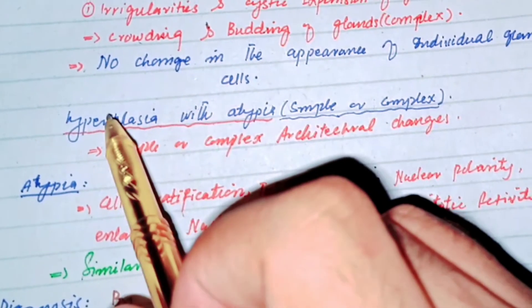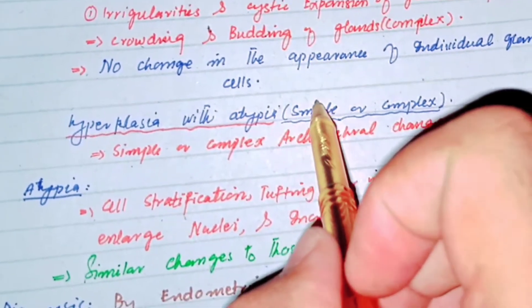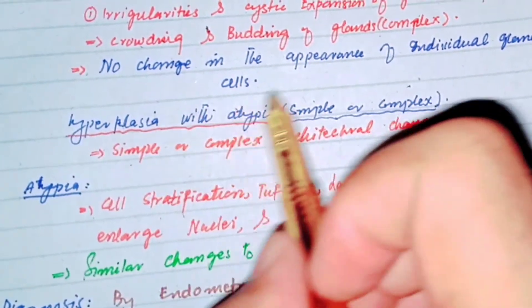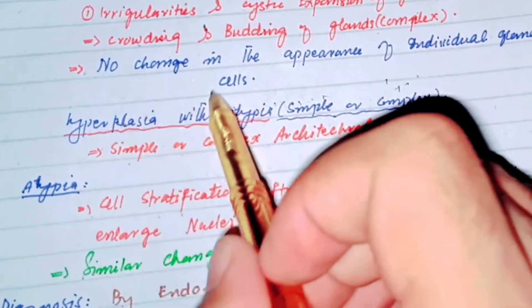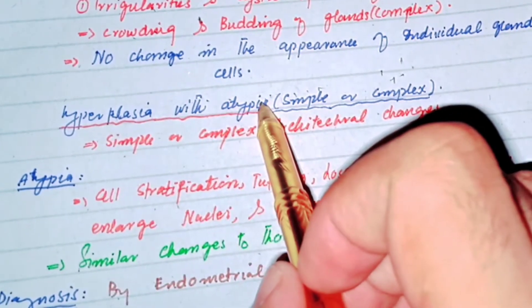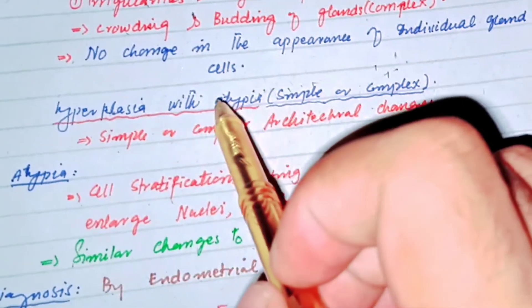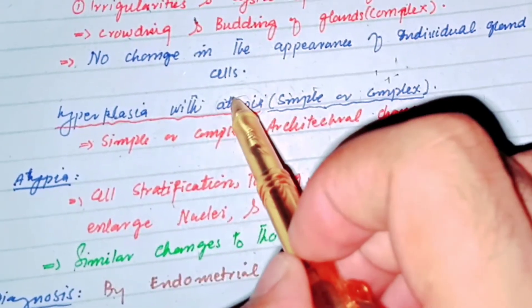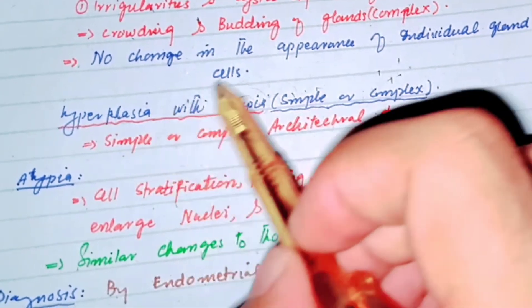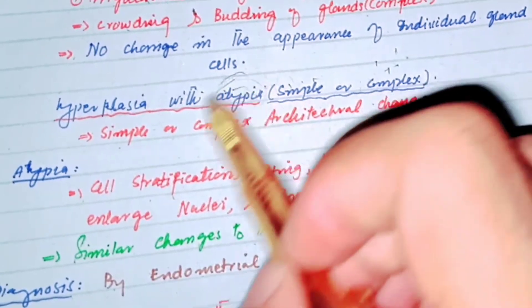The second category is hyperplasia with atypia, which may be simple or complex. In simple hyperplasia with atypia there is irregularity and cystic expansion of the glands. In complex hyperplasia with atypia there is crowding and budding of the endometrial glands along with cellular atypia — meaning proliferation of cells occurs along with changes at the cellular level.